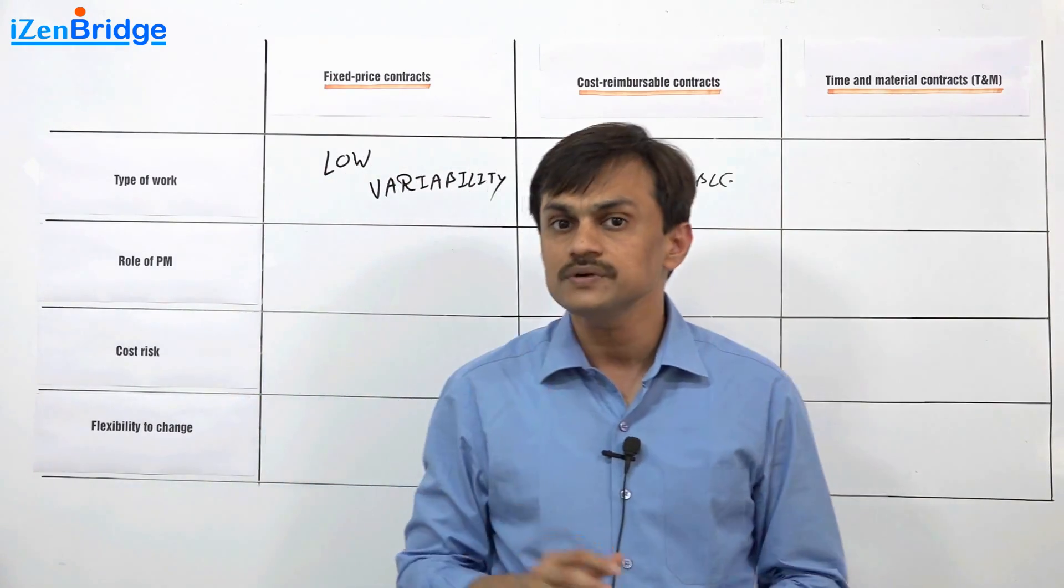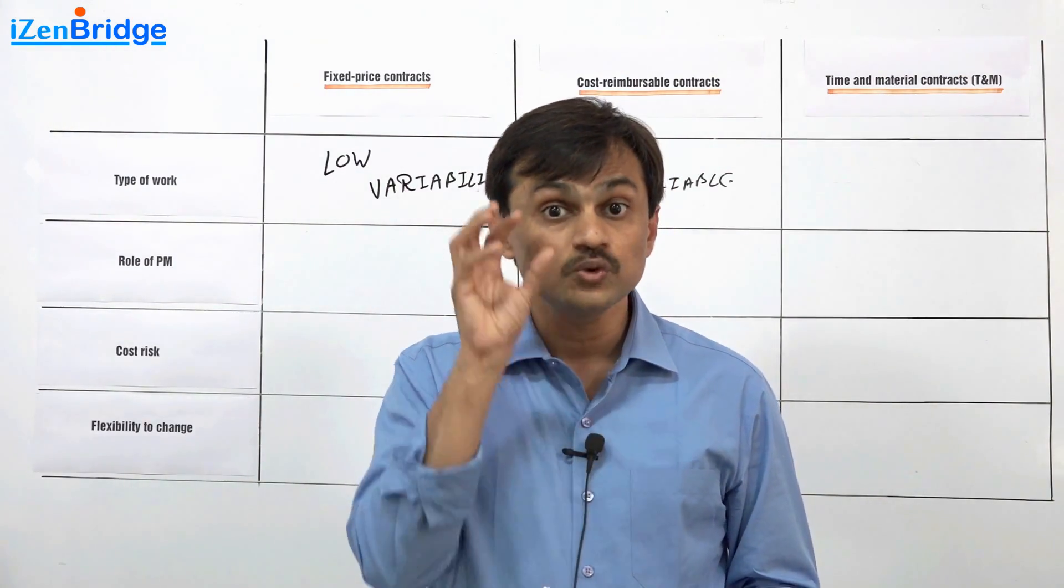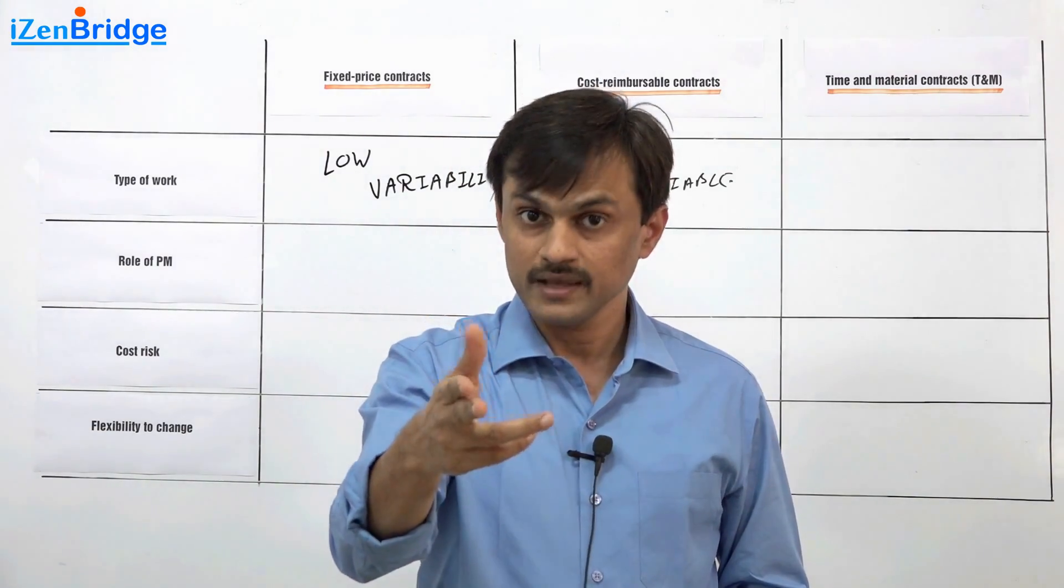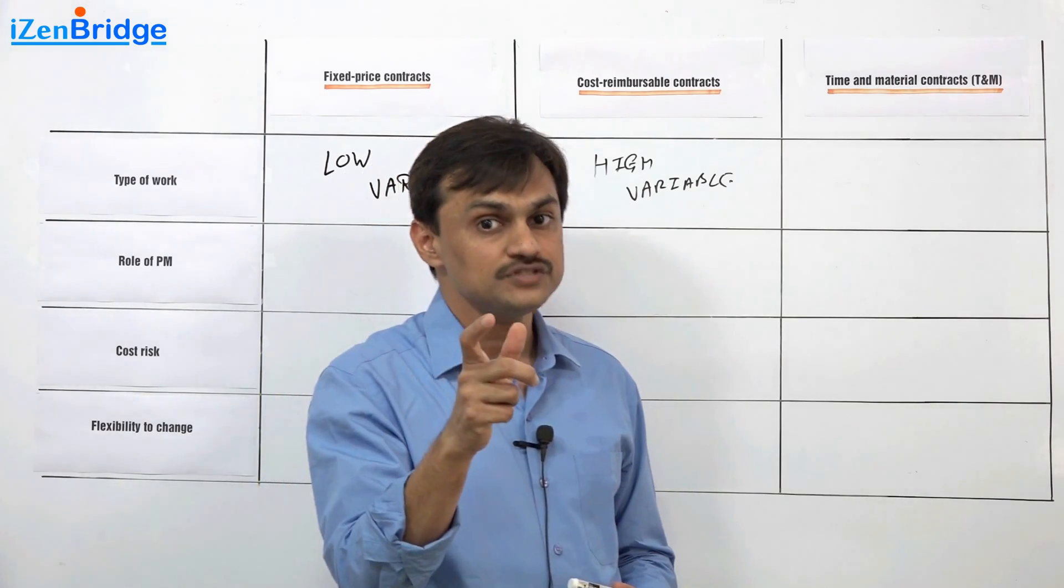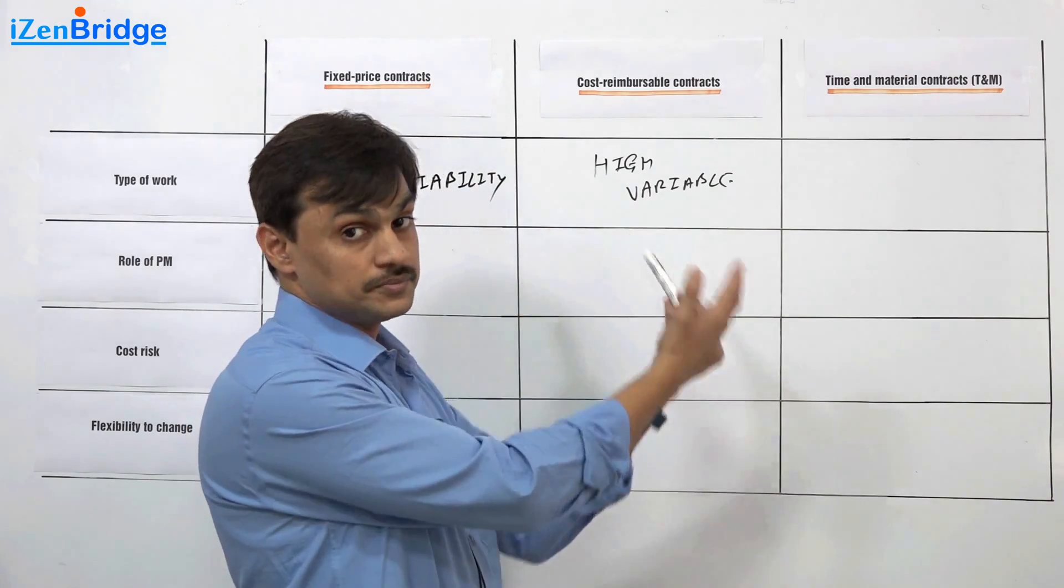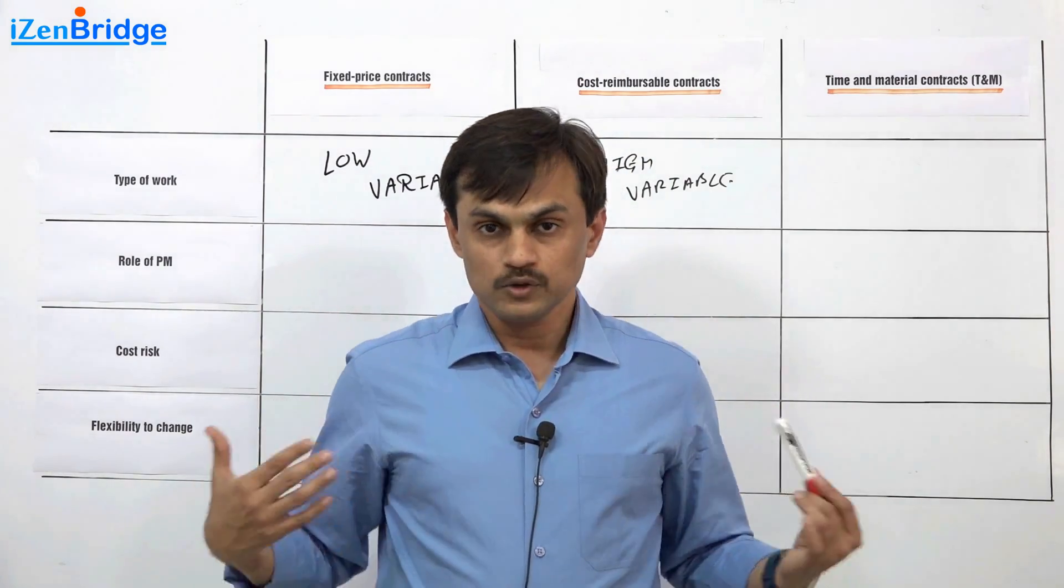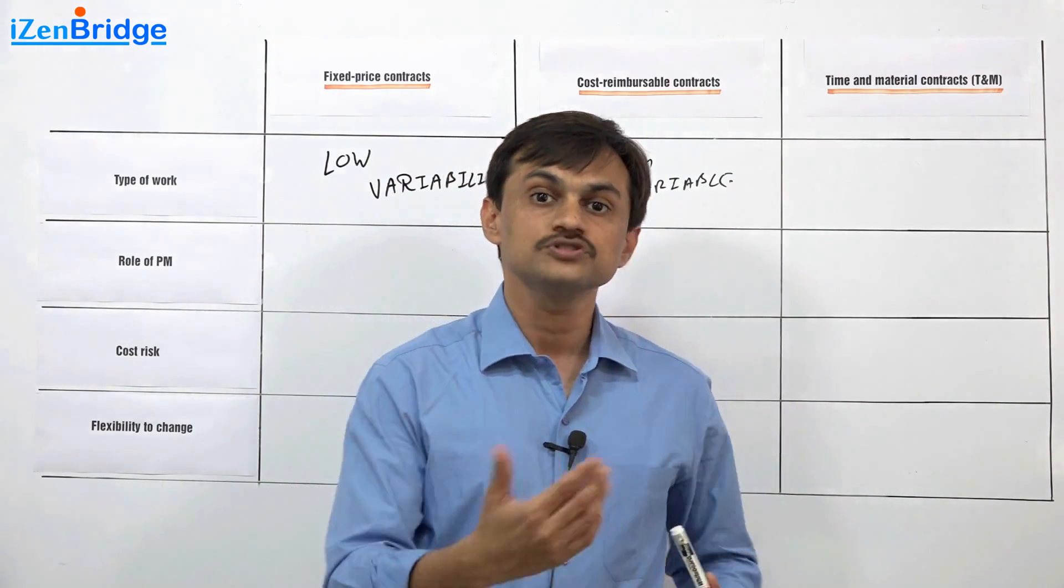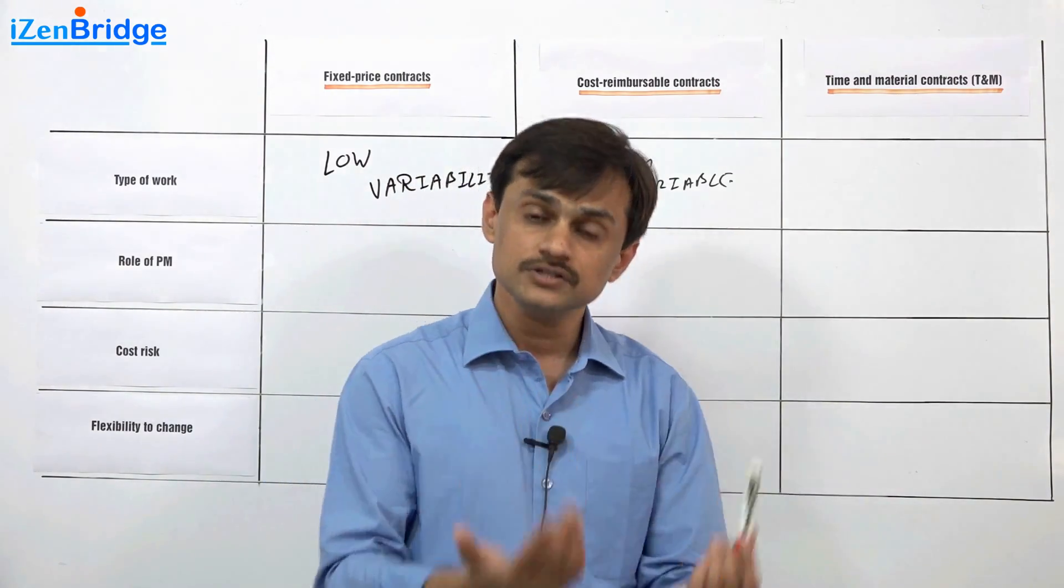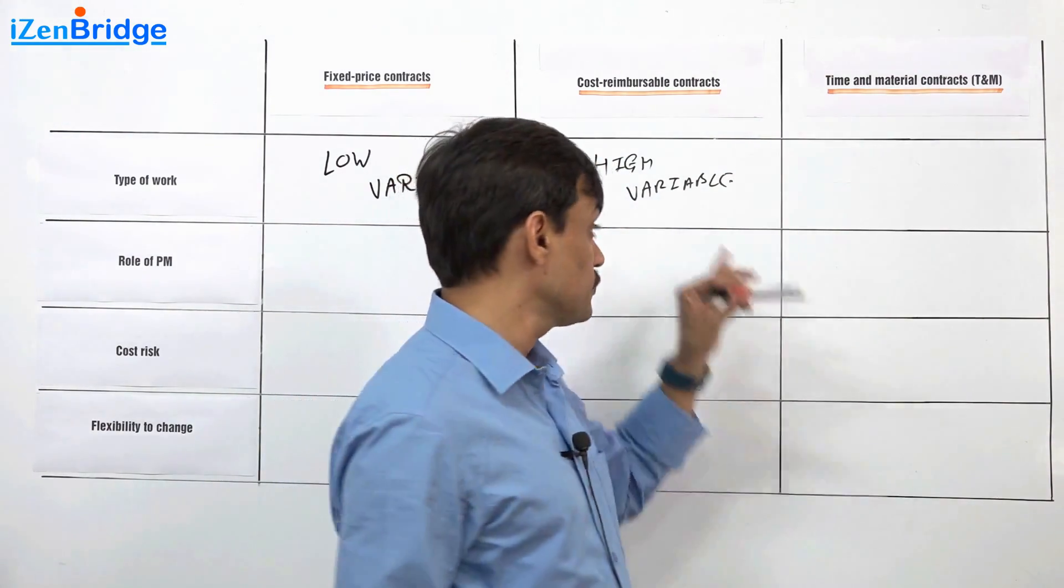When we get into a cost reimbursable contract, usually the idea of a buyer is not to get something in a bare minimum cost but to get the goal achieved even if in between the direction changes multiple times. And that is why in order to provide that flexibility of change in direction, in order to accept the variability, high variability work goes into cost reimbursable. Which makes the seller also relieved that both of us are on the same boat. If buyer likes the proposed solution, the buyer will pay for it. If he does not like it, I will find another solution and this is how we will go forward.